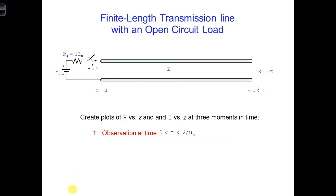I want you now to work on a related problem. The same transmission line is now terminated by an open circuit—RL equals infinity. Make a plot of the voltage versus z along the transmission line at three different moments in time. The first moment in time is listed here: time is between zero and L over uₚ. This exercise will prepare you for the homework and for the exam.